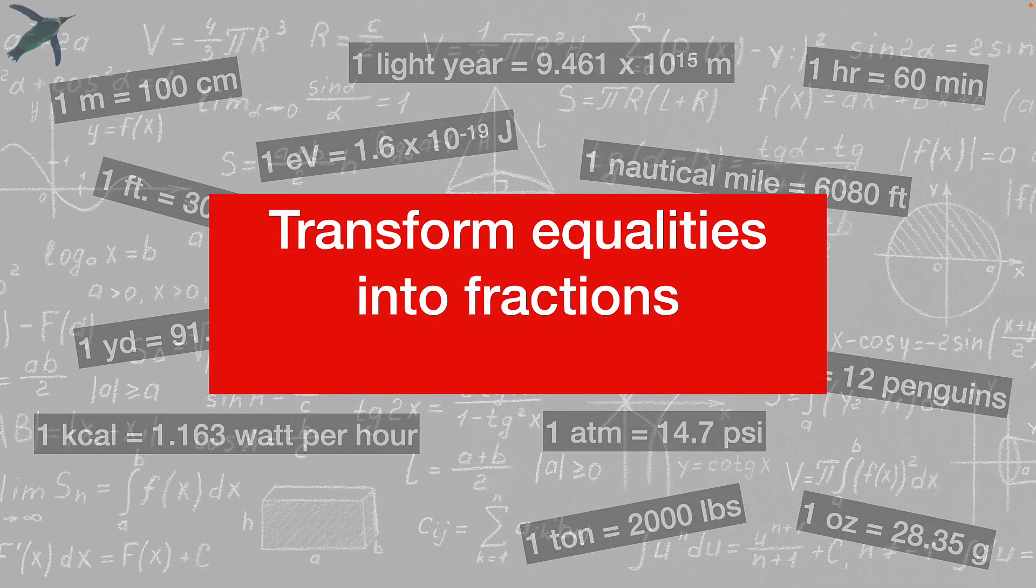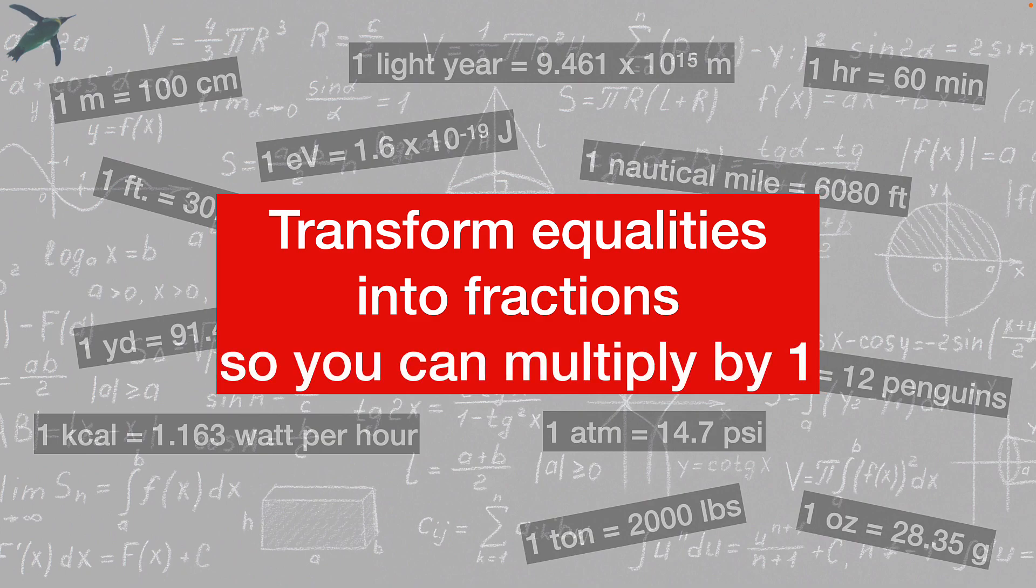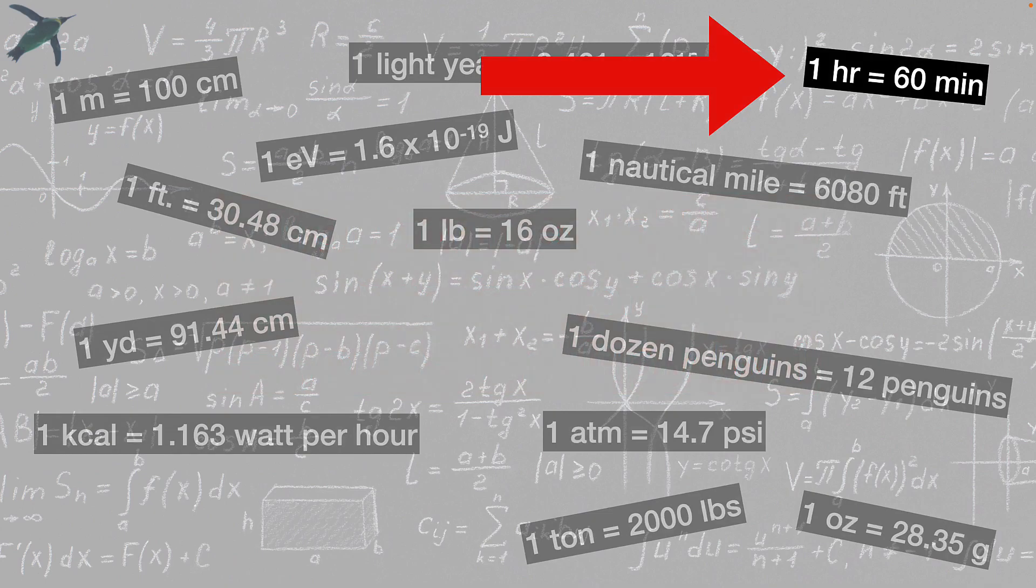So what you have to do is transform these equalities into fractions and then you can use them to multiply by one to get the units that you want. So let's look at this one. One hour equals 60 minutes. So you can put one hour over 60 minutes. That's equal to one.